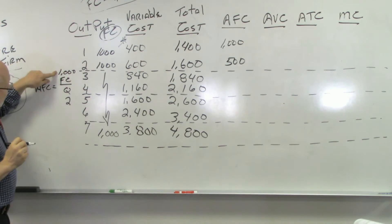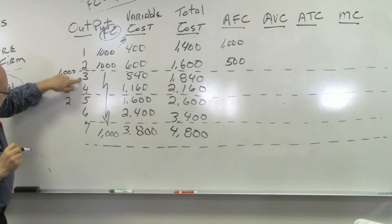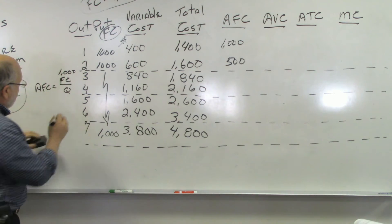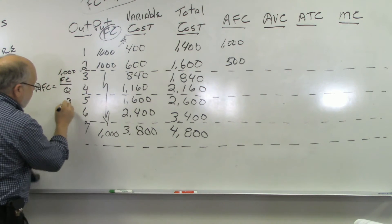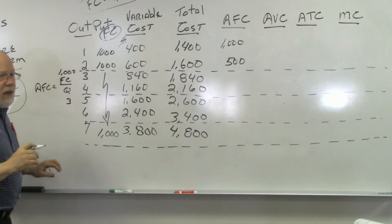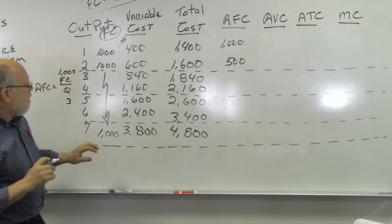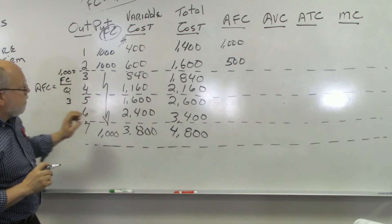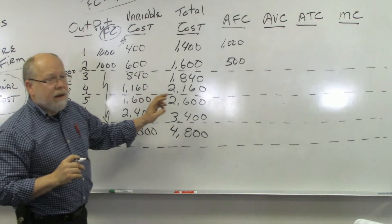Our fixed cost is still $1,000, and now our quantity goes up to 3. So we have $1,000 divided by 3, which gives us approximately $333.